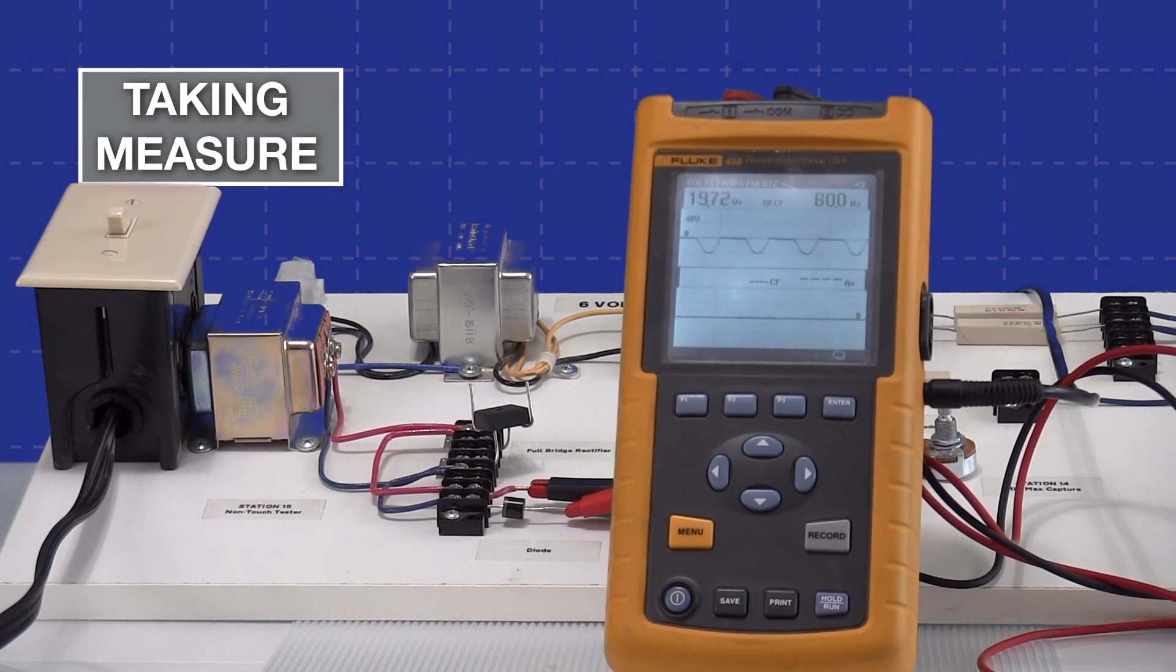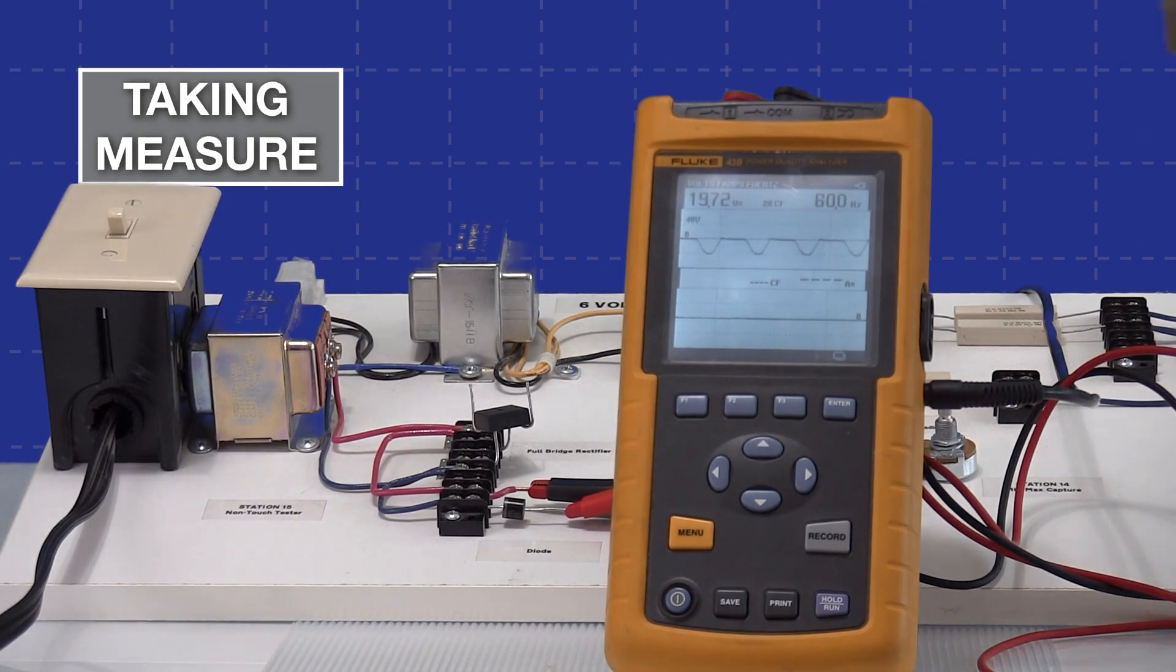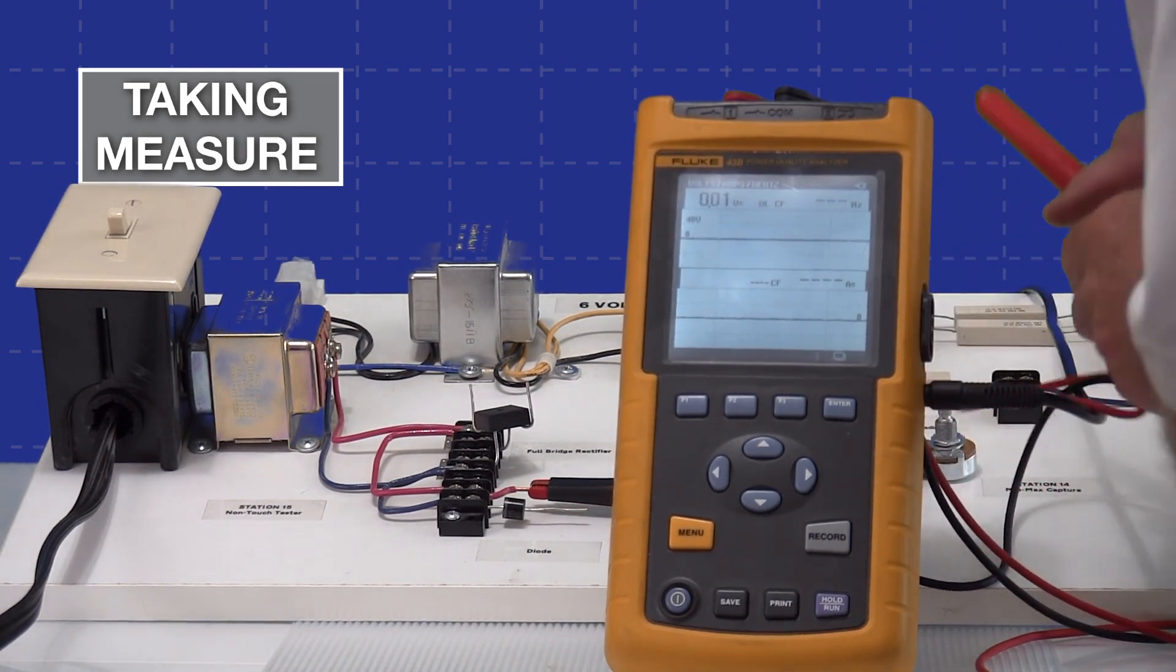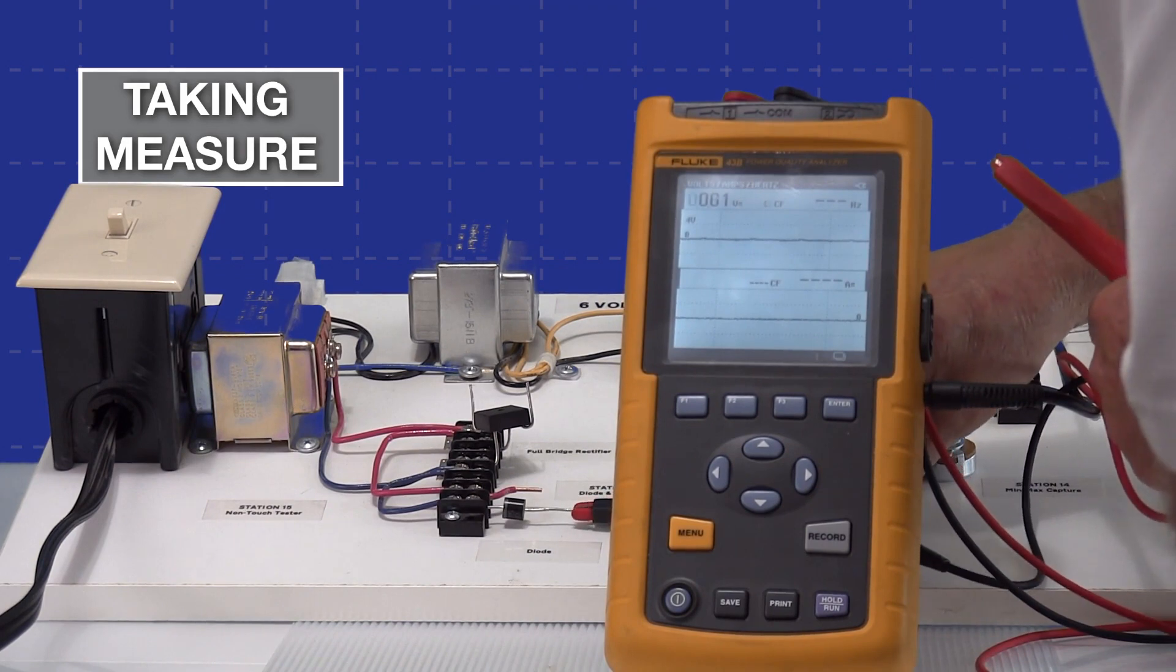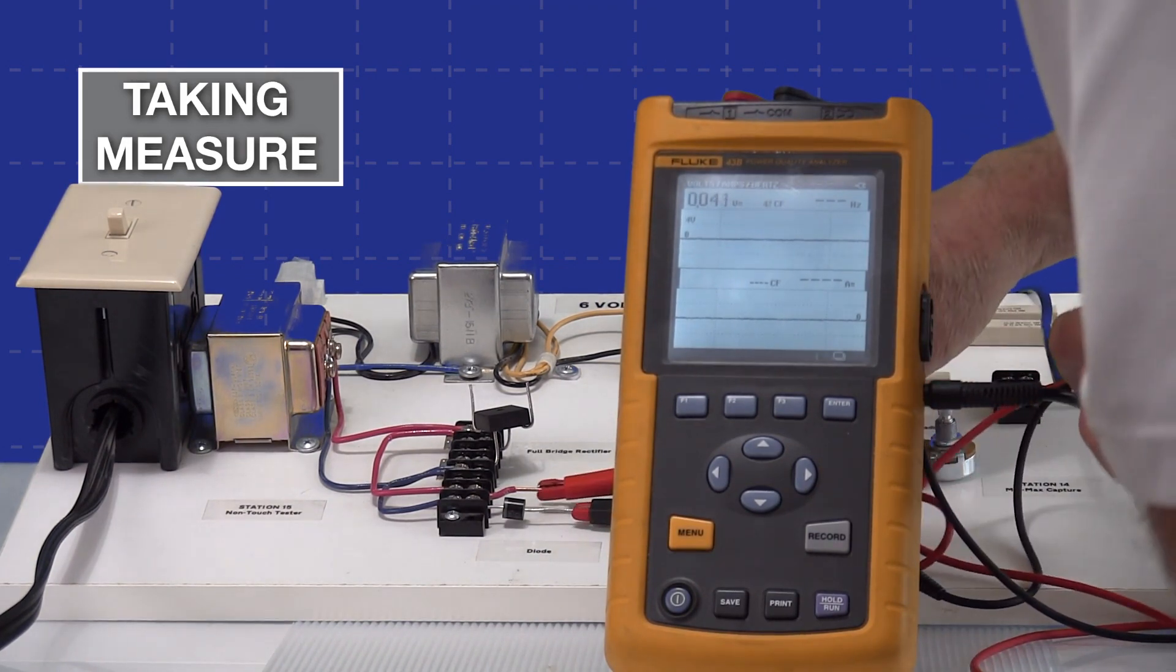And if I swap the leads, you'll see I'll just swap where the half of the sine wave appears. It'll appear on the top on the positive side.